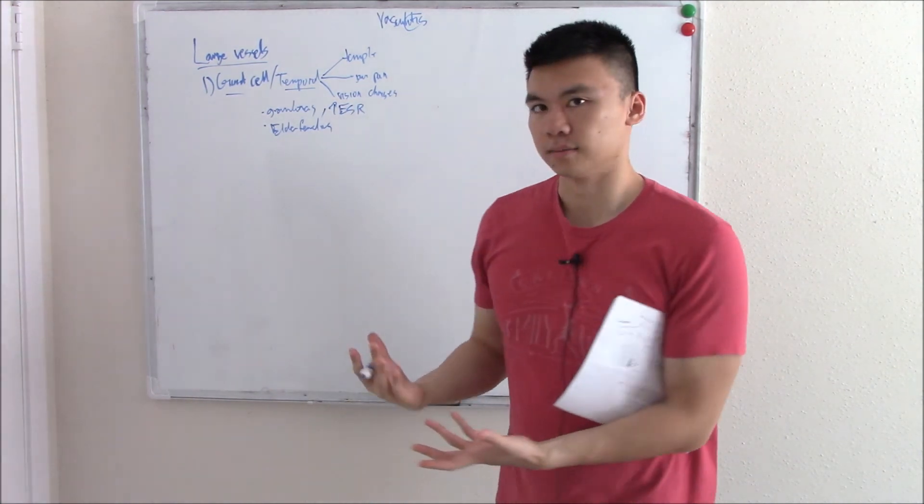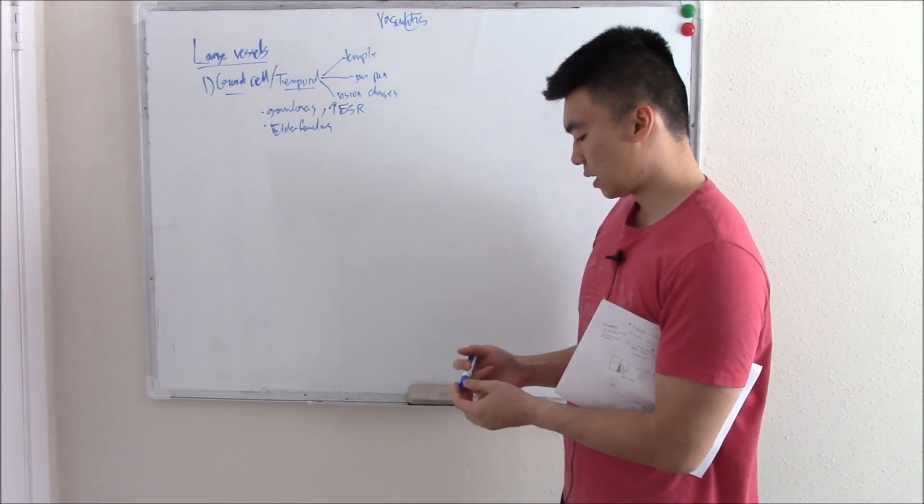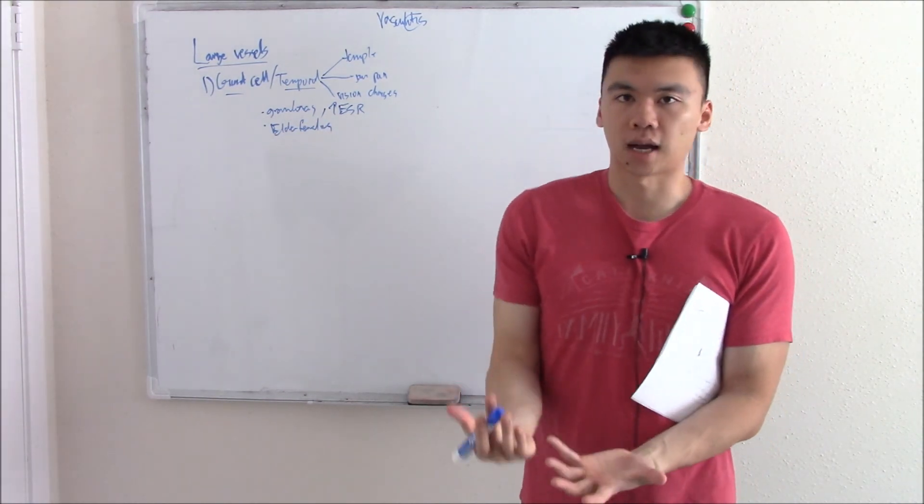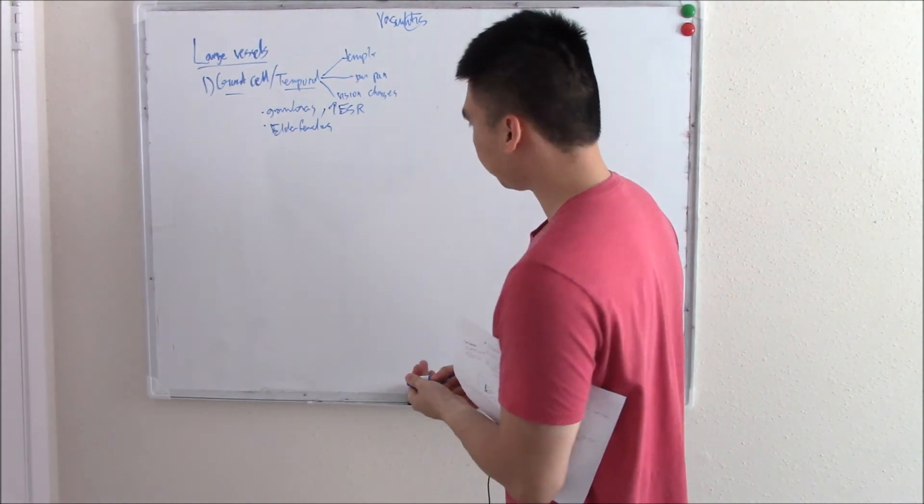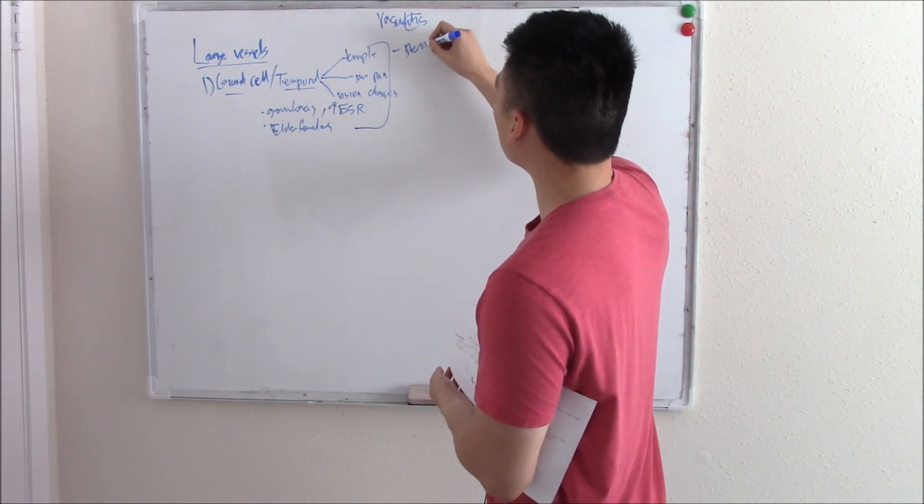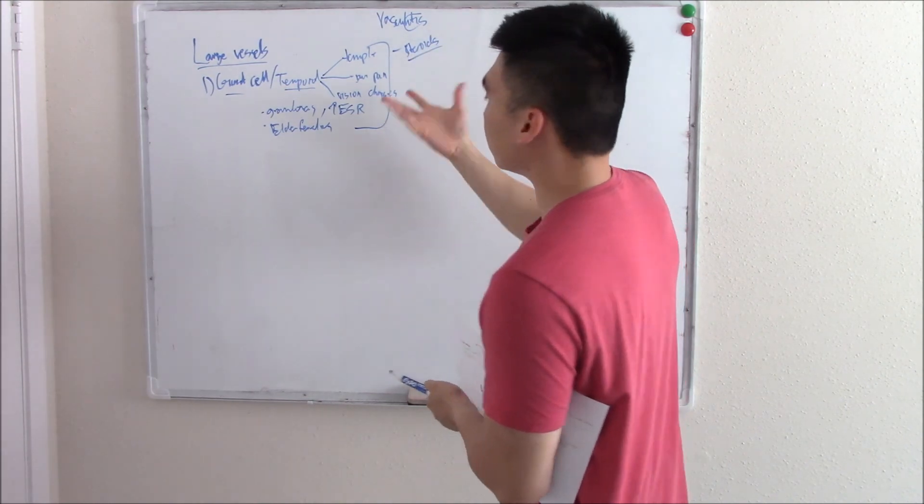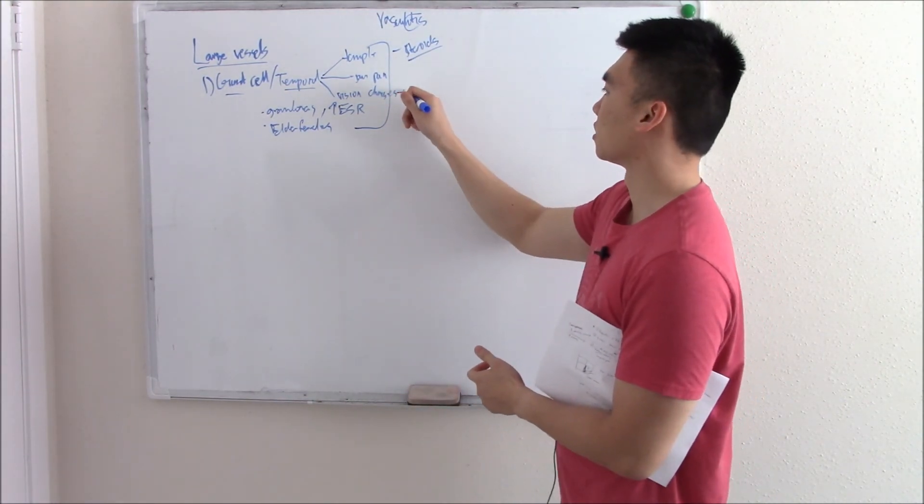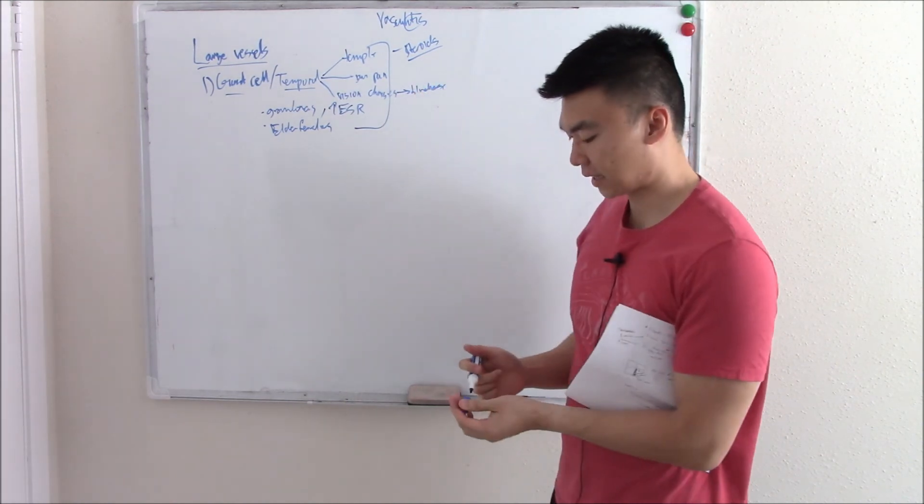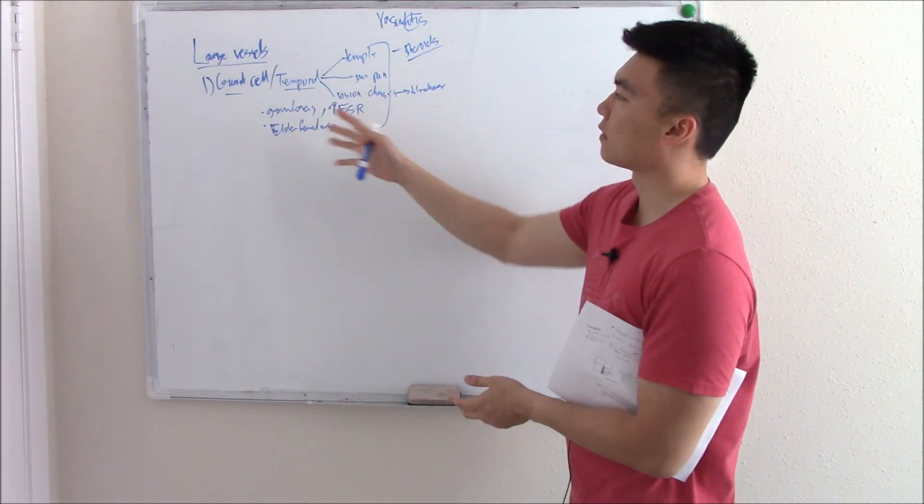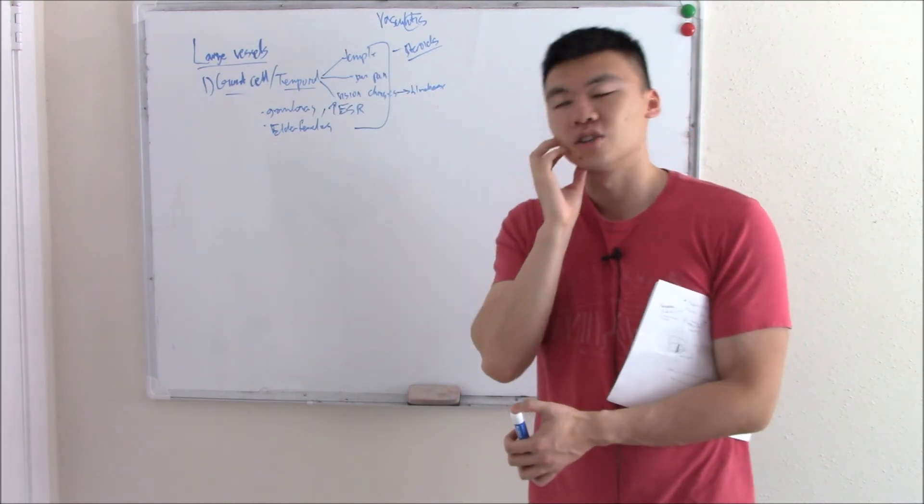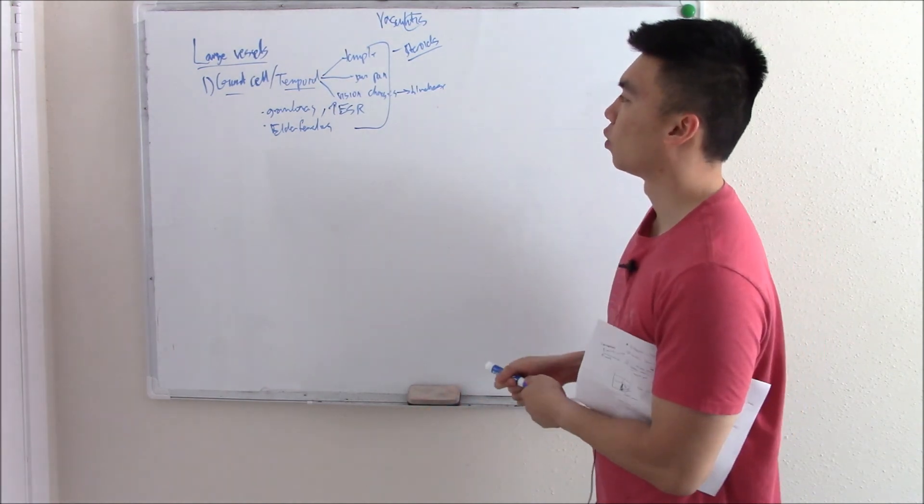What do you do about it? You can confirm it with a biopsy to look for those granulomas, but that takes some time. If you see this, you immediately give steroids. You do not wait for the biopsy because it can cause vision loss, permanent vision loss, blindness. That's a very important fact. If you see someone and you have a clinical suspicion - an old lady, vision changes, tender temple, jaw pain - give them steroids right away. Don't wait.